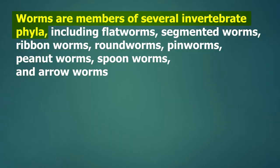Worms are members of several invertebrate phyla, including flatworm, segmented worms, ribbonworms, roundworms, pinworms, peanutworms, spoonworms, and arrowworms. Yes, all of these different types of worms.